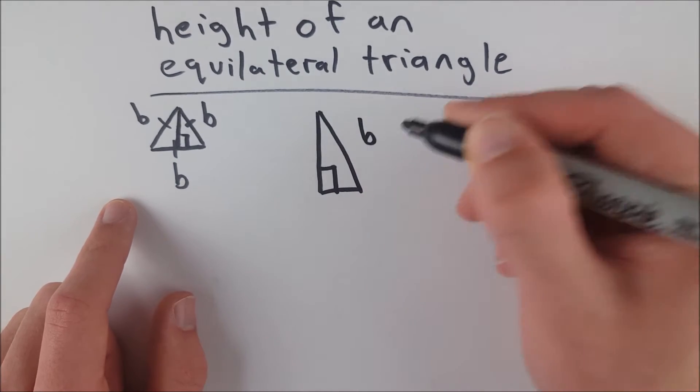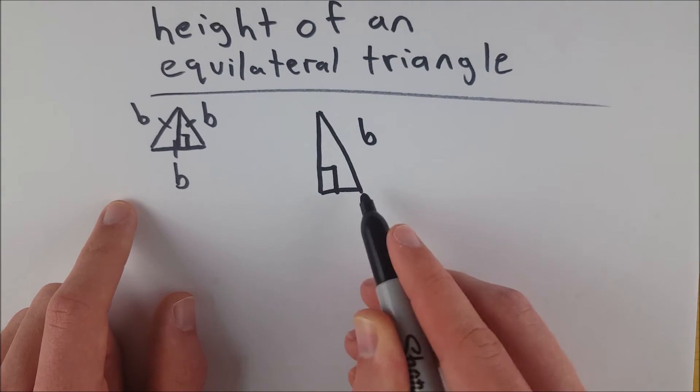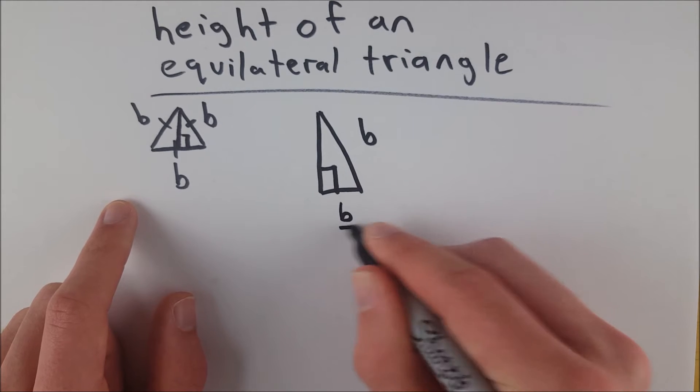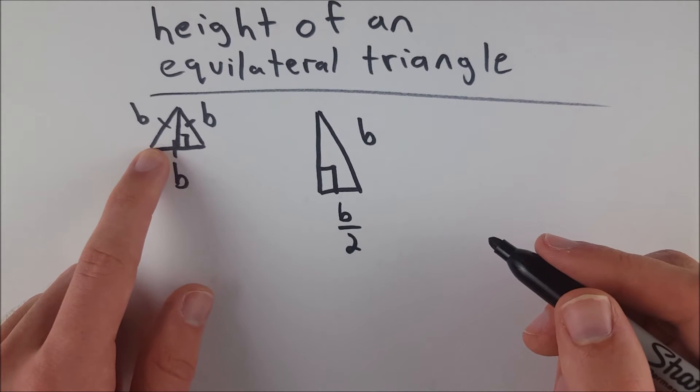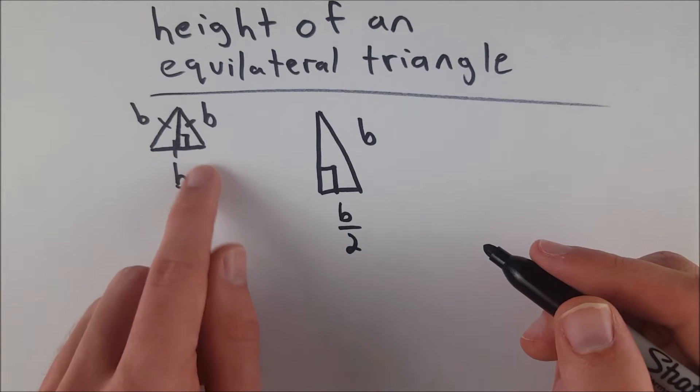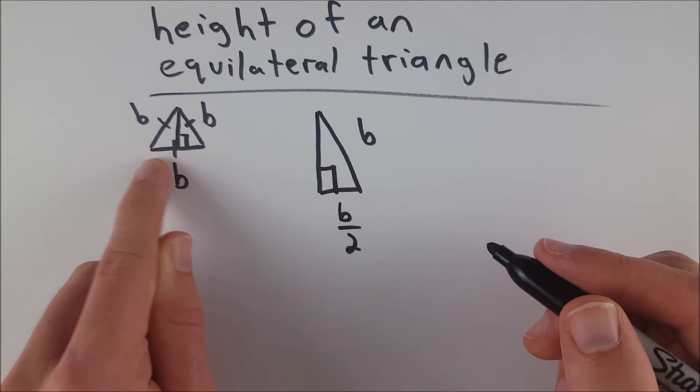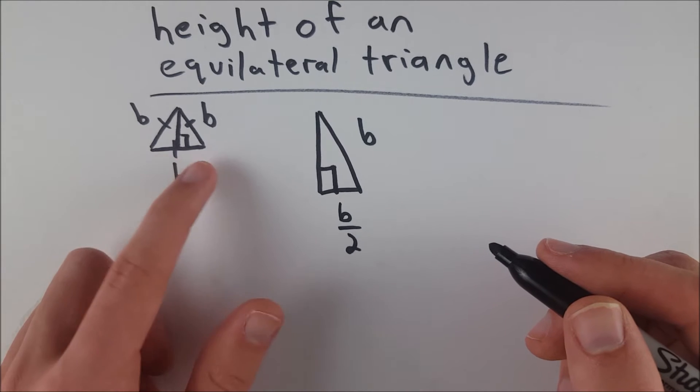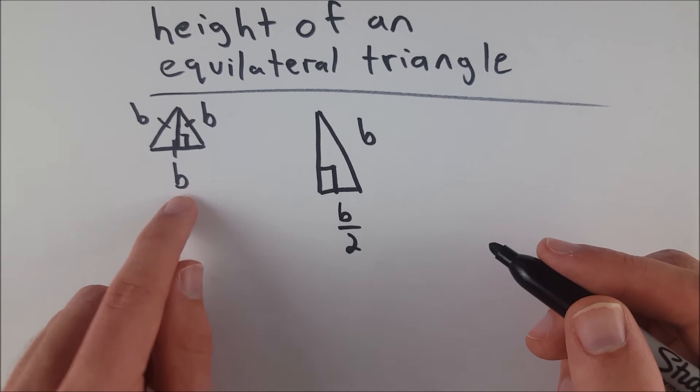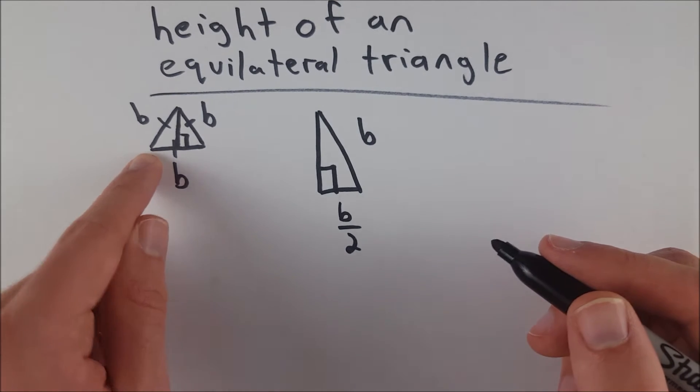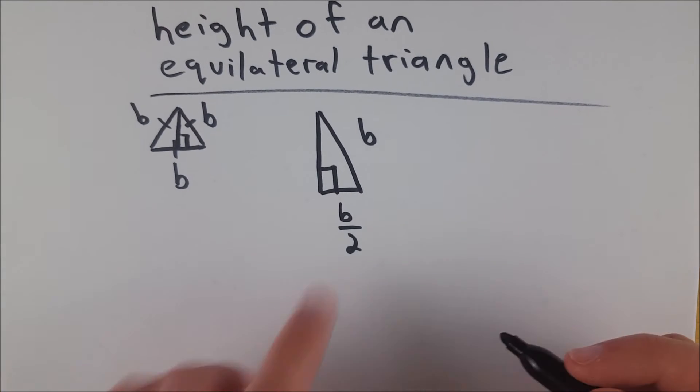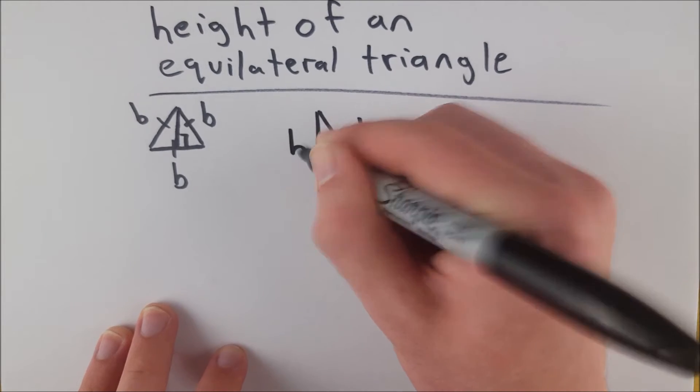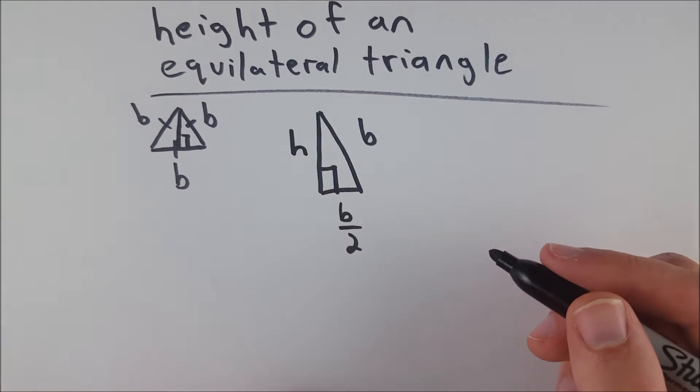So let's say we've taken this right triangle. It's got a hypotenuse length of B. We know that this leg length is B over two, because we bisected this side, since we know this side has to be congruent to this side, because these triangles are congruent. So this has to be B over two, and this has to be B over two, so that they add up to B, the base length of the whole equilateral triangle. So this leg length is B over two, this hypotenuse is B, and this leg length is H, the height, which is what we're trying to find.